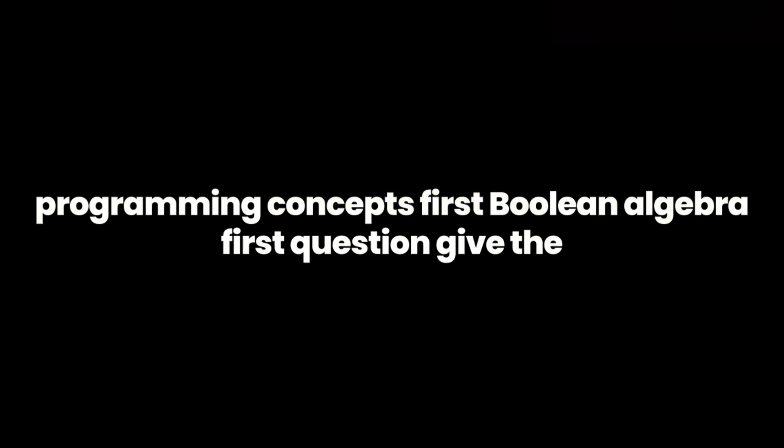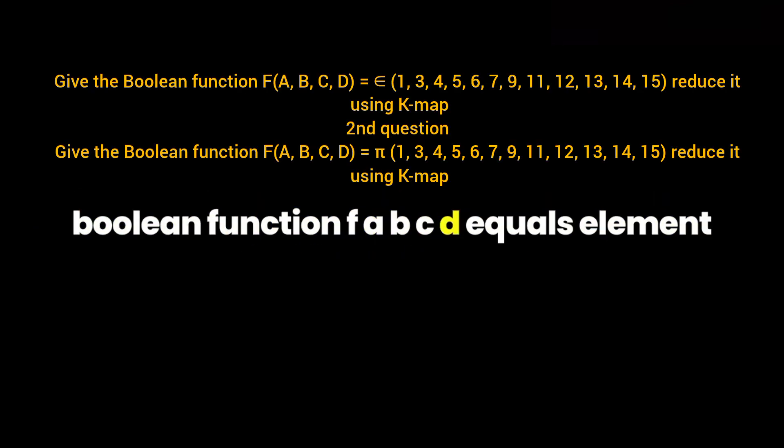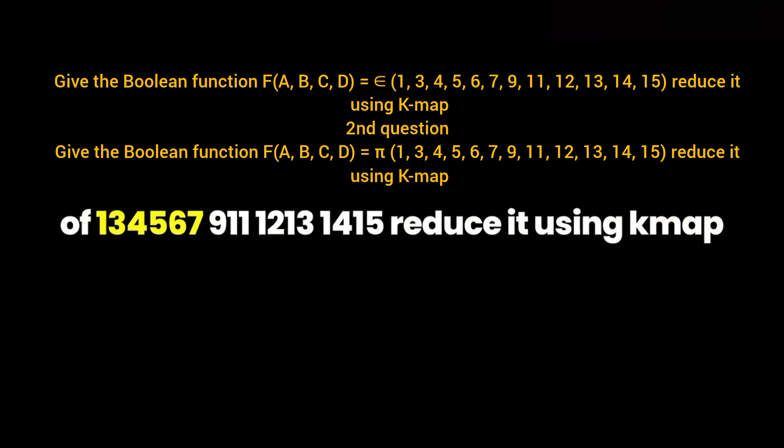First Boolean algebra. First question: Give the Boolean function F(A, B, C, D) = ∈(1, 3, 4, 5, 6, 7, 9, 11, 12, 13, 14, 15). Reduce it using K-map.